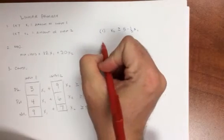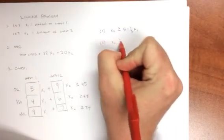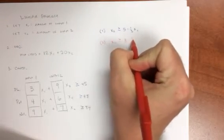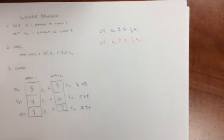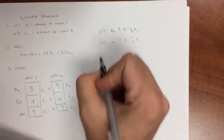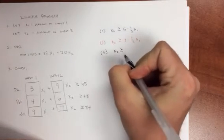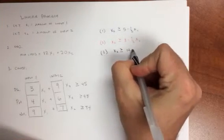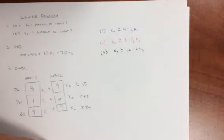Now the constraint for potash, this is our second constraint, is x2 must be greater than or equal to 8 minus 2 thirds x1. And our third constraint is x2 is greater than or equal to 12 minus 2 x1. So now I have these three constraints. So now the next step is to graph this out.